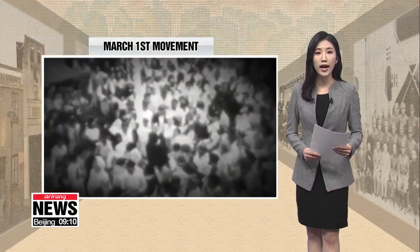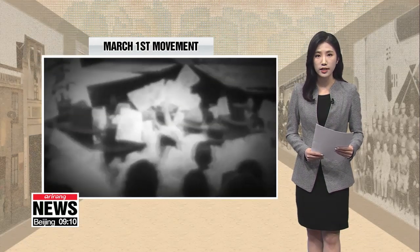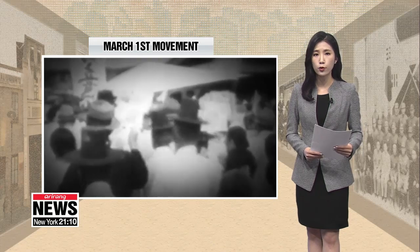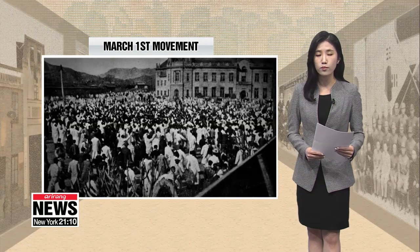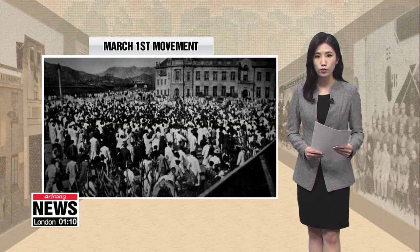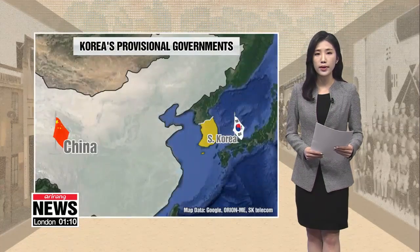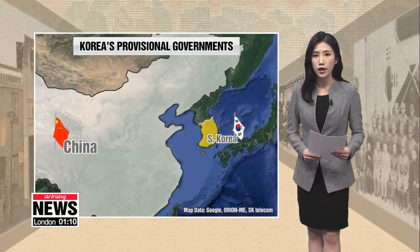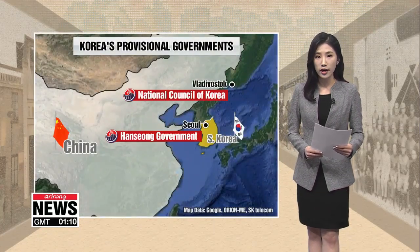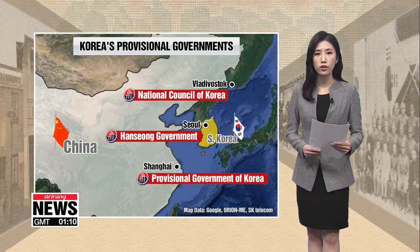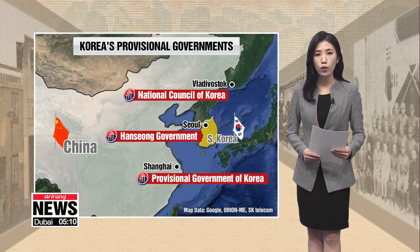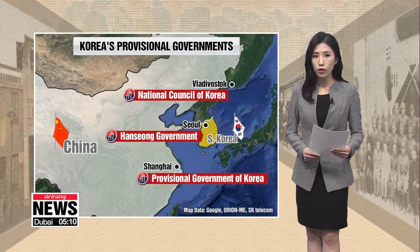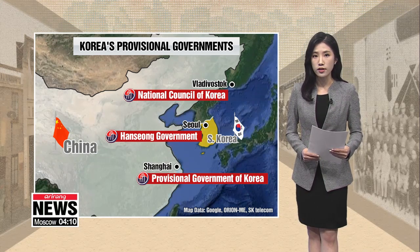It all goes back to March 1st of 1919, when following months of protests, Koreans declared their country free and independent from Japan's colonial rule. With the March 1st movement as a catalyst, Korean independence fighters in Shanghai established a provisional government in April the same year. Among the eight or more provisional Korean governments, both at home and abroad, there were three main ones.